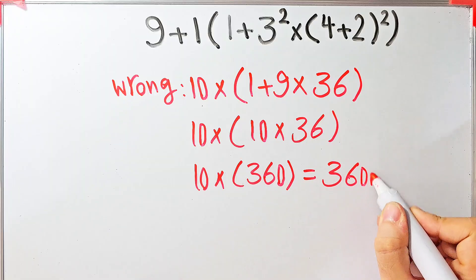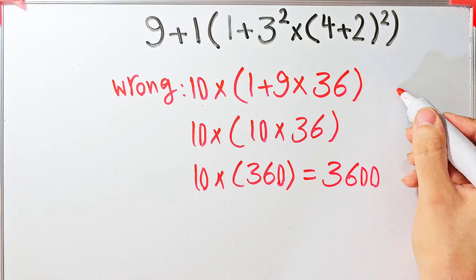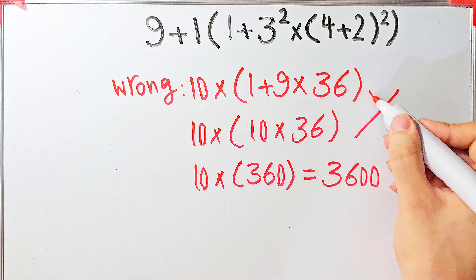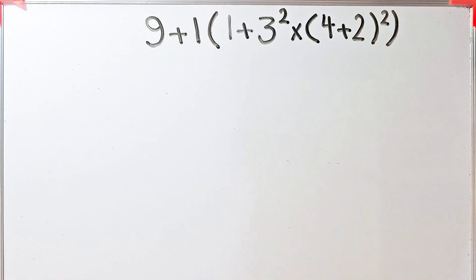Then 10 times 360 equals 3600. They say the final answer equals 3600, but this answer is wrong. Let's solve this question step by step together.